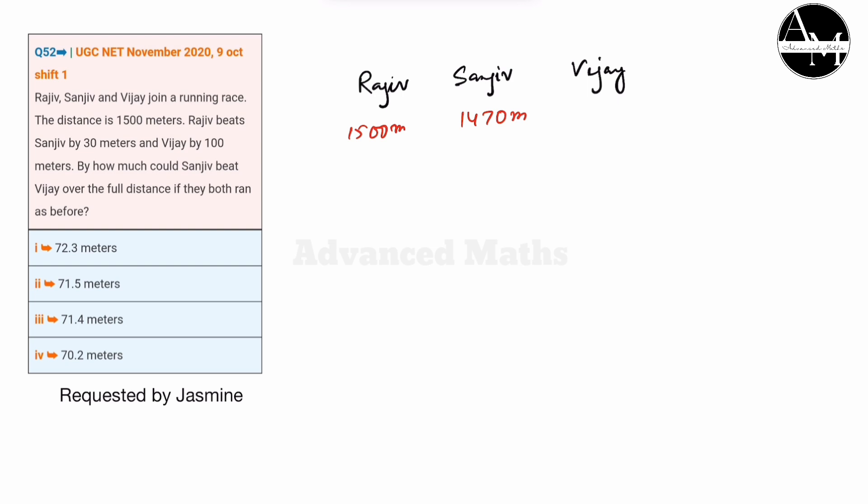Looking at the 100 meters difference, the data shows 1500 meters total and 1400 meters covered, giving us a difference that we need to calculate.